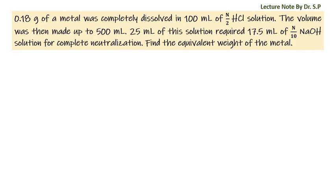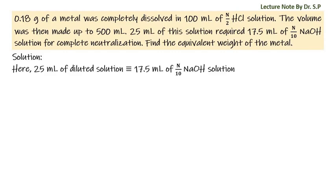We have a question: 0.18 grams of a metal was completely dissolved in 100 milliliters of N by 2 HCl solution. The volume was then made up to 500 milliliters. 25 milliliters of this solution required 17.5 milliliters of N by 10 NaOH solution for complete neutralization. Find the equivalent weight of the metal.